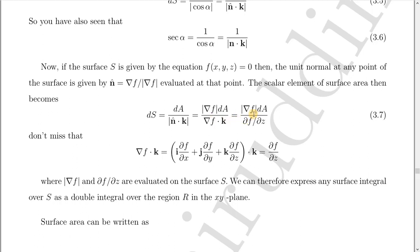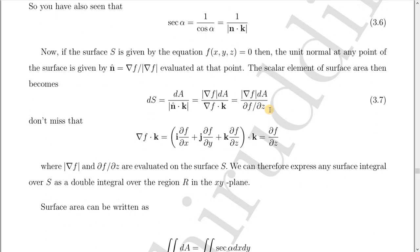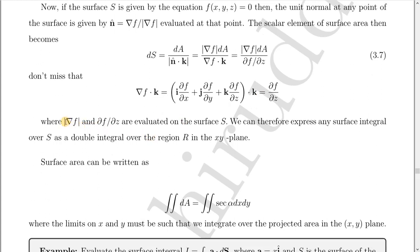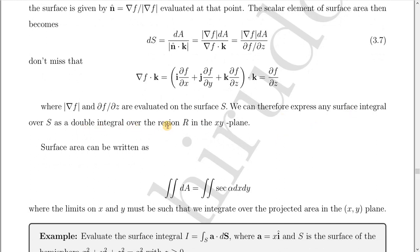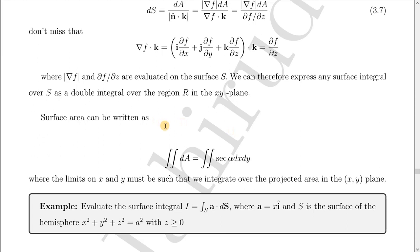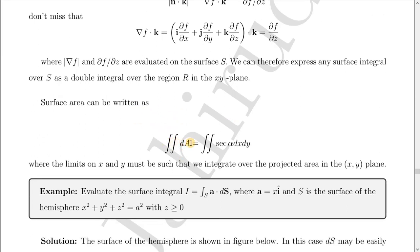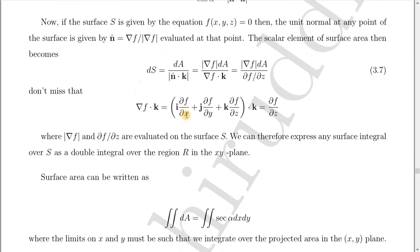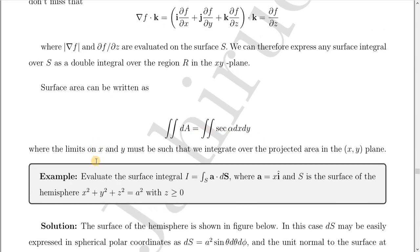This is because ∇f · k̂ = ∂f/∂z, since ∇f = i(∂f/∂x) + j(∂f/∂y) + k(∂f/∂z), so dotting with k̂ gives ∂f/∂z. Note that ∇f and ∂f/∂z are evaluated on the surface S. We can therefore express any surface integral over S as a double integral over R in the xy-plane. If evaluating just the surface area, dS = sec α dx dy.